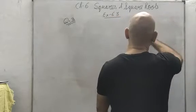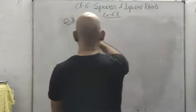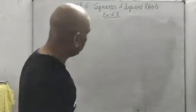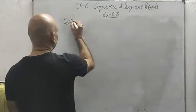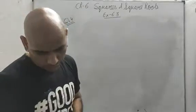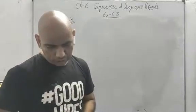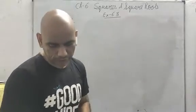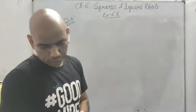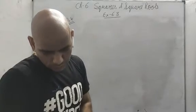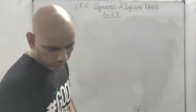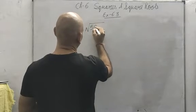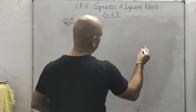Now question number 4: use the prime factorization method to find square roots. There are 10 parts and all parts you will have to do. I am going to do 2 for you. First one is part 7 — the number is 5929.